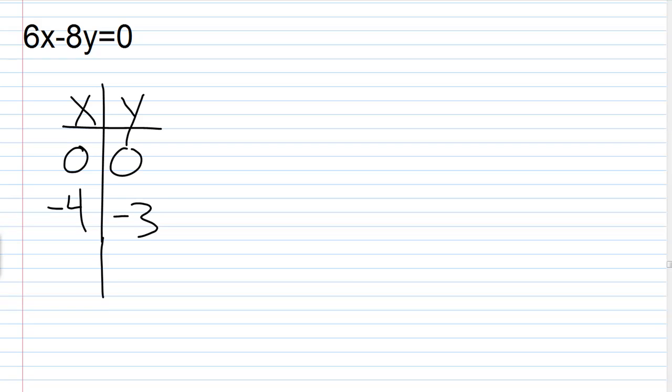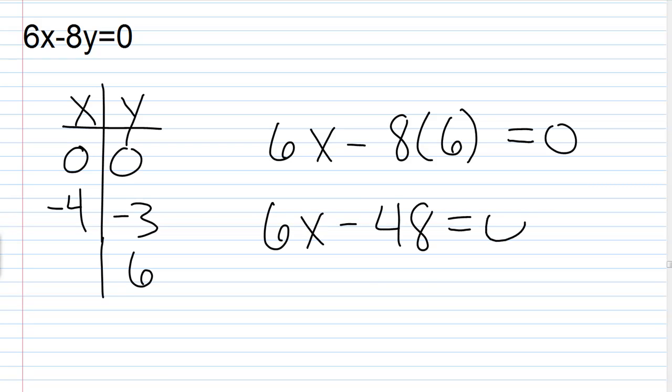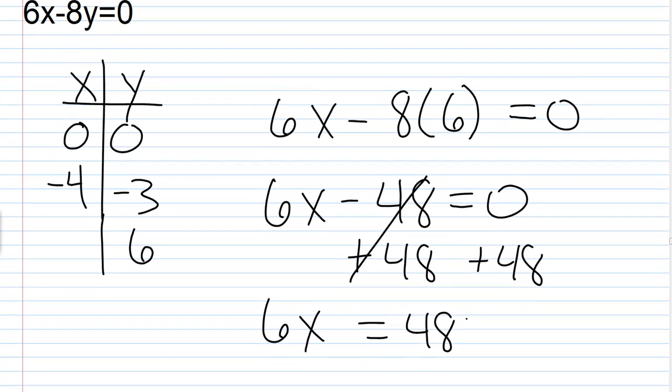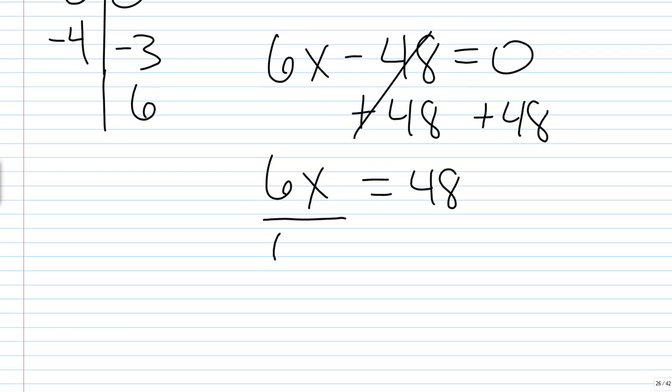One more point just for a check or test point here. Let's choose a y value of 6—that would work out pretty well. If we had 6x minus 8 times 6 equals 0, 8 times 6 is 48, this would be 6x minus 48 equals 0. Add 48 to both sides, we get 6x equals 48. Divide both sides by 6, and we get x equals 8. 48 divided by 6 is 8.